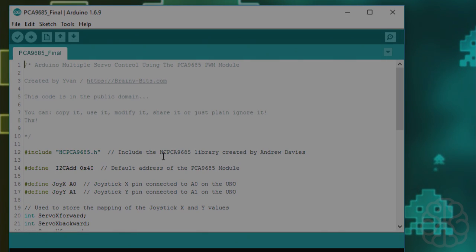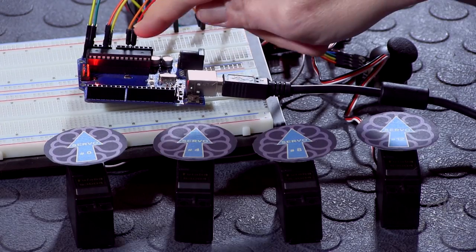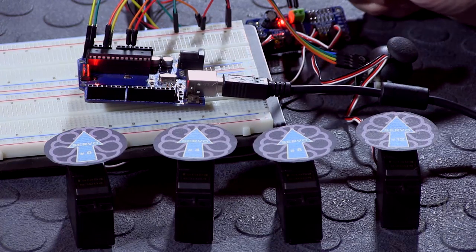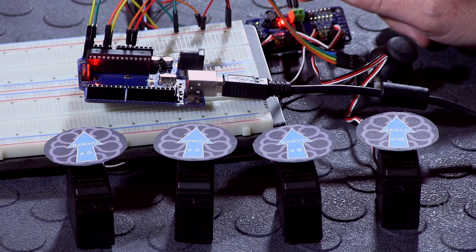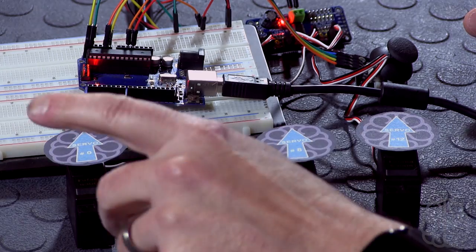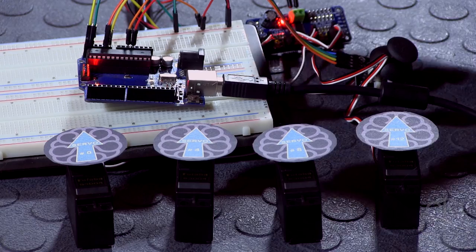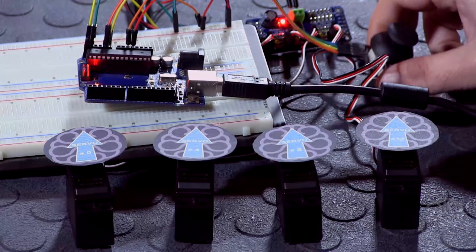Welcome back. We looked at the code, I already uploaded the code to the UNO right here. The UNO is powered by USB and we're powering the PCA module here using a 5 volt 2 amp external power supply. Everything is connected. I've identified the servos, you got 0, 4, 8, and 12. These correspond to the connections on the modules right here.